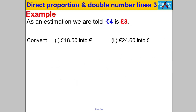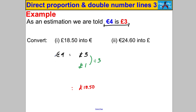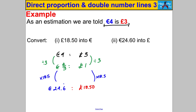Next question — pause and have a go. Always write your rate down first. For the currency question: I want to convert £18.50 to euros. It's not obvious how to scale up, so first divide both sides by 3 to find the unit rate for one pound. Leave it as a fraction for now since it's not the final answer.